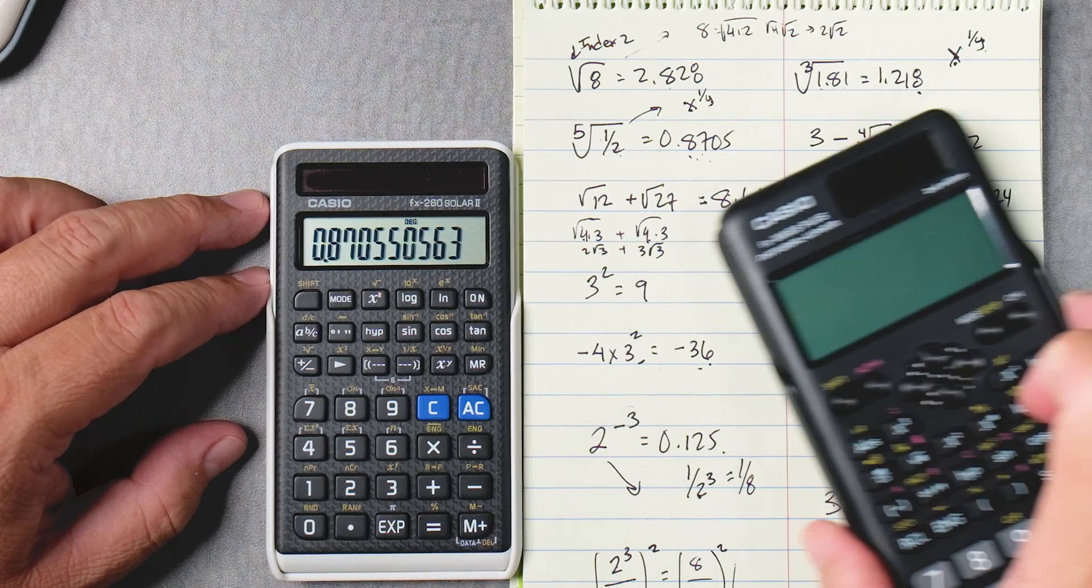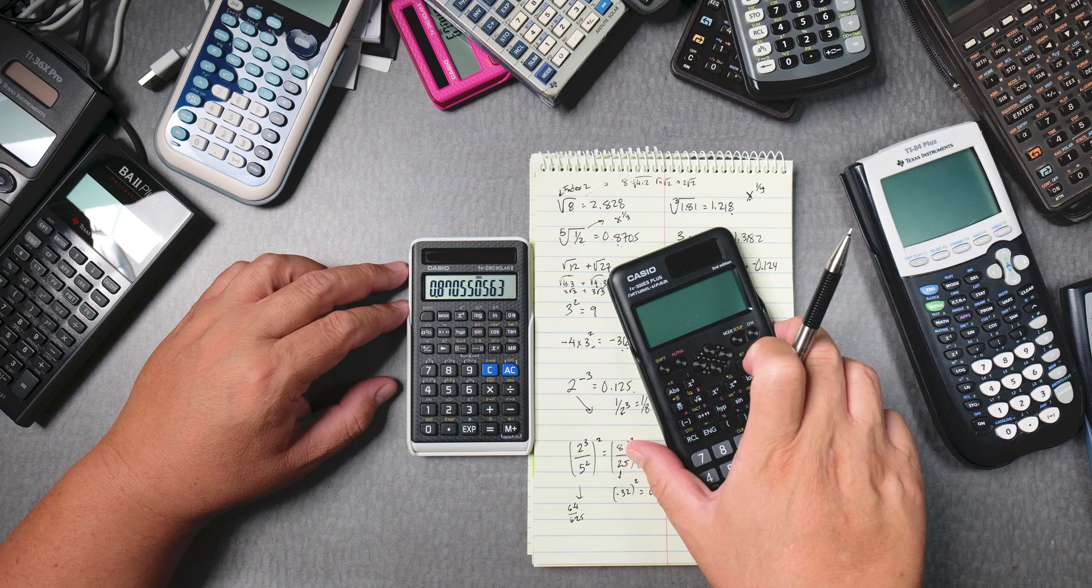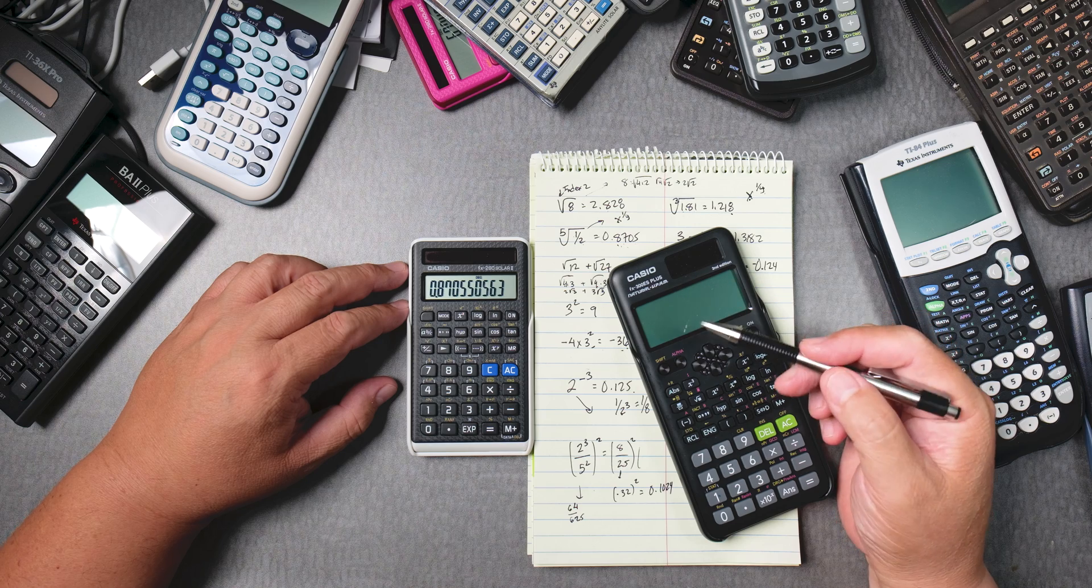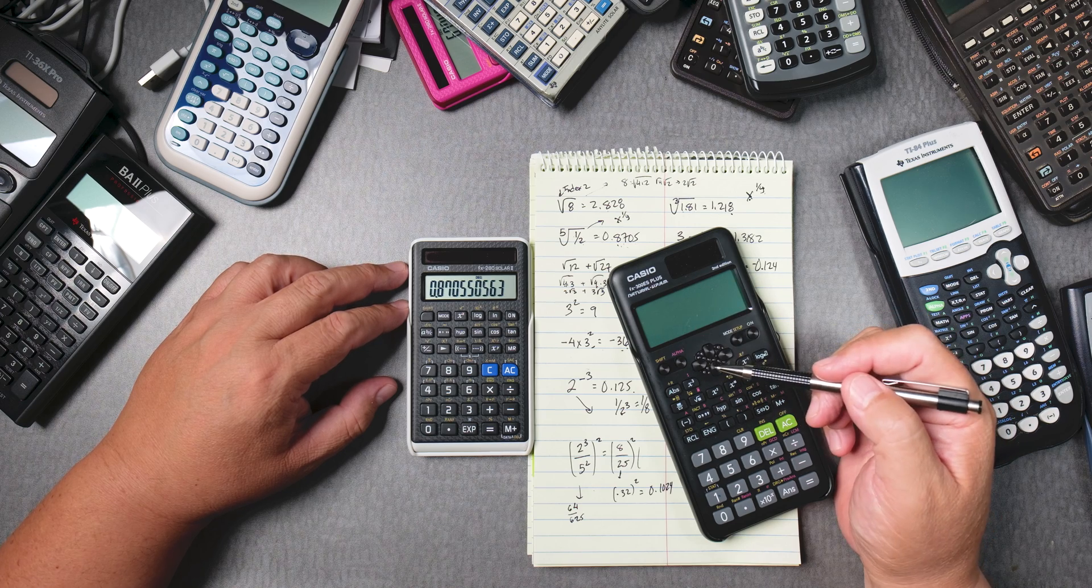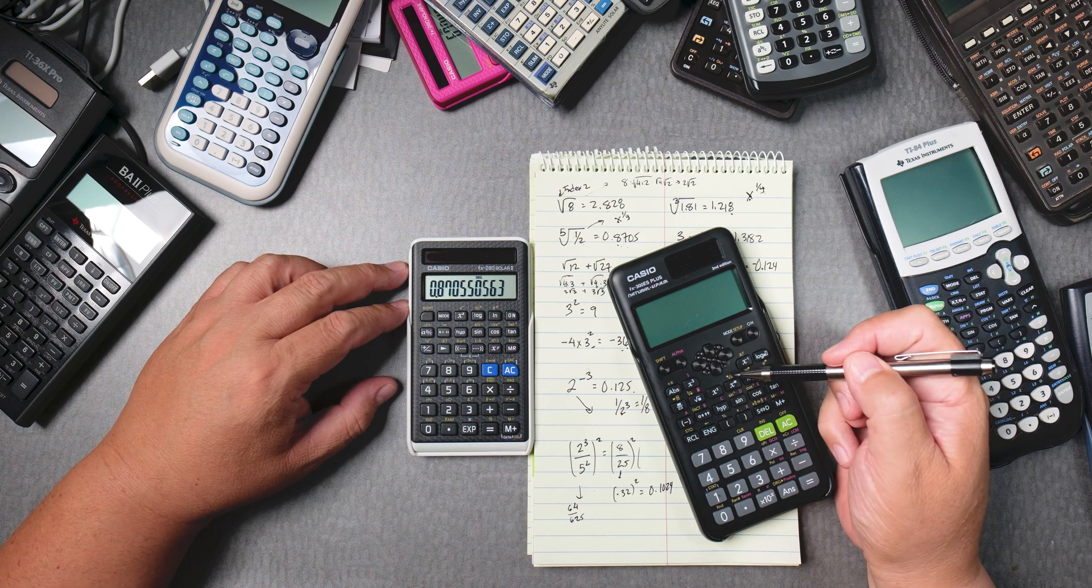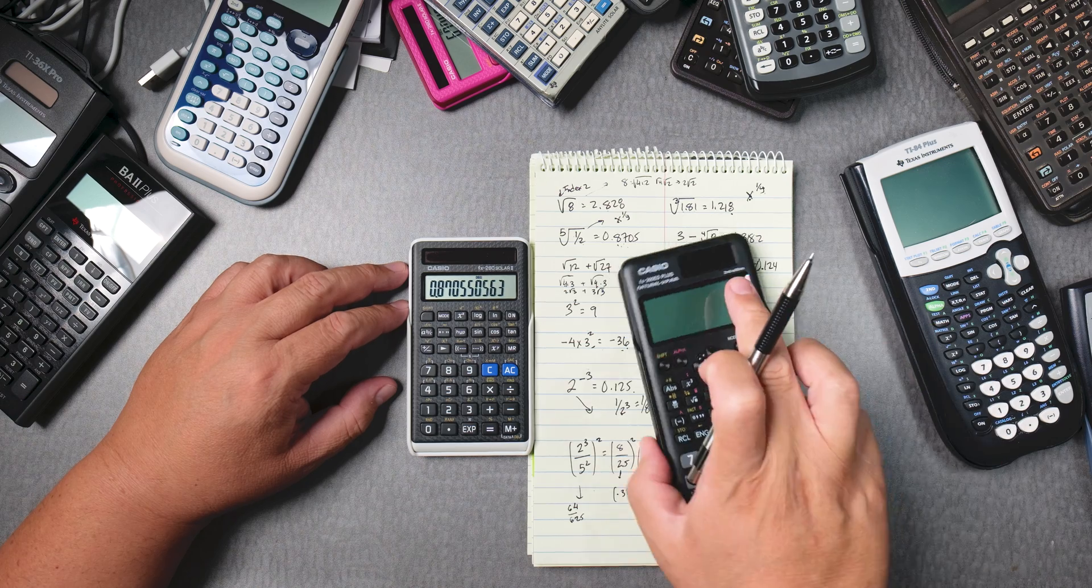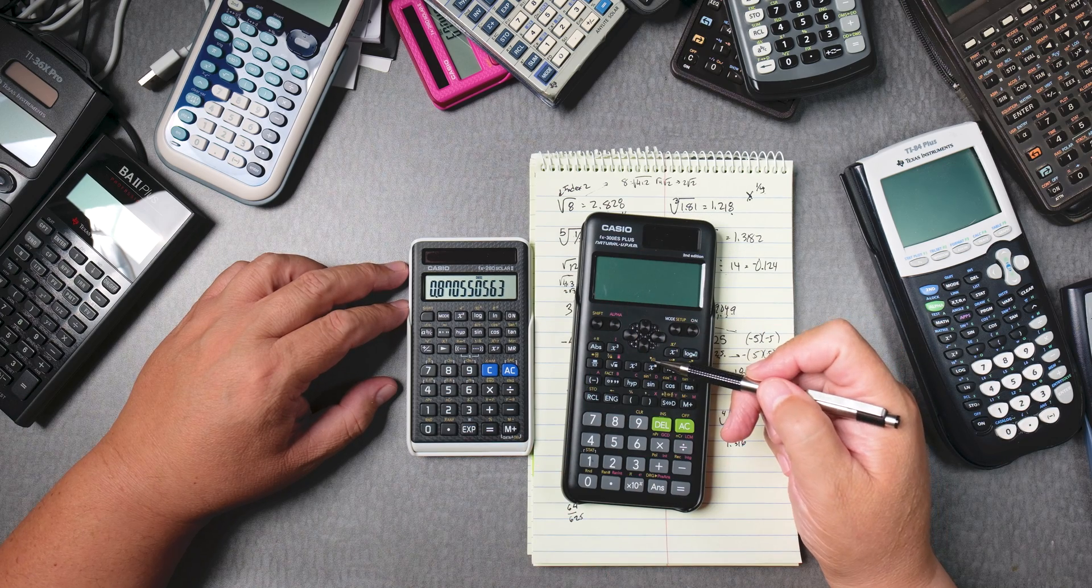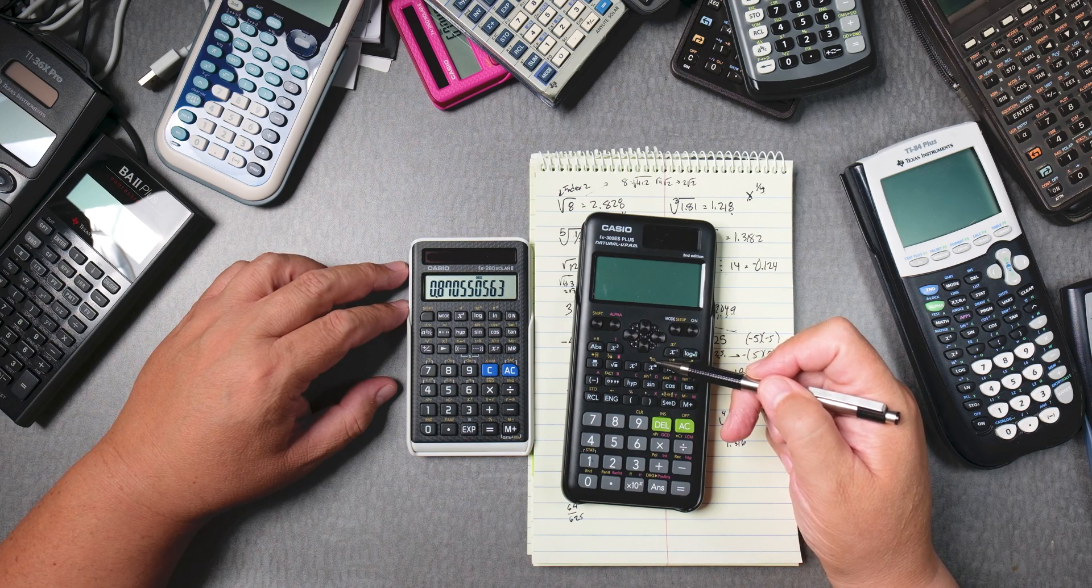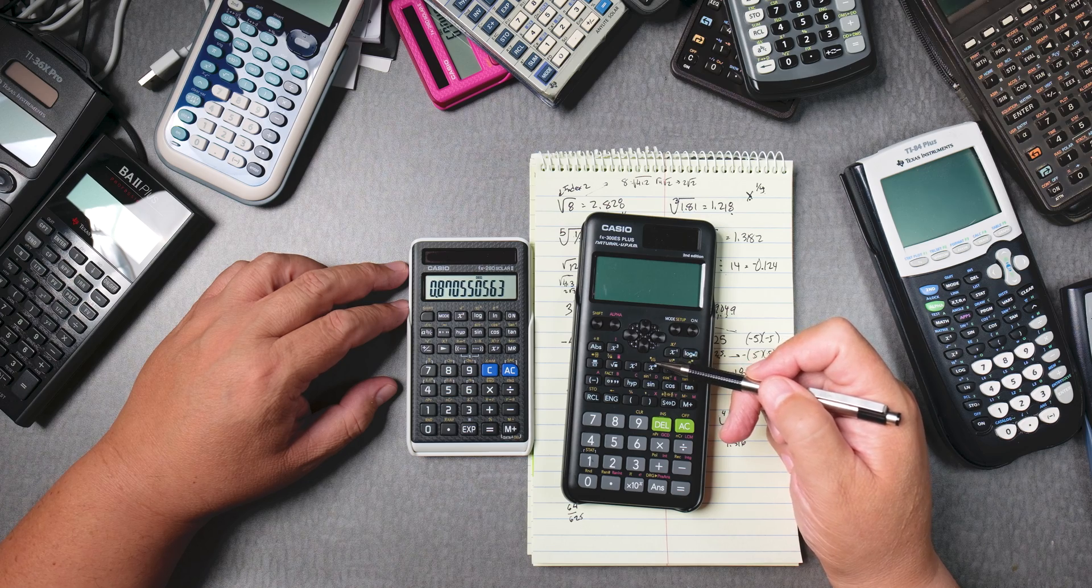Now if you use something like the Casio FX300ES plus you'll find out that entering that information is a little bit more easier. As you can see over here there is a key where it has a box square root of another box so you can put the index and a number in there.